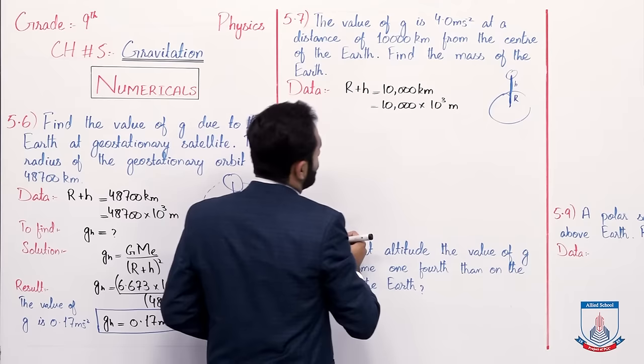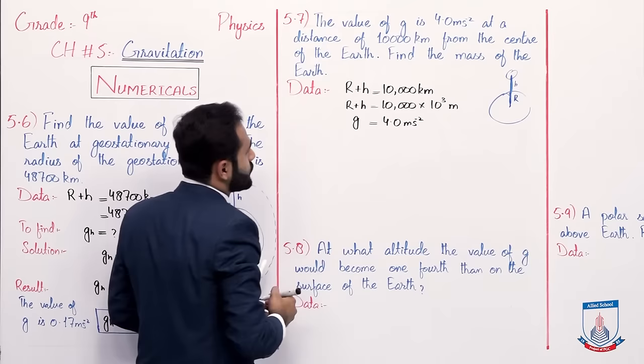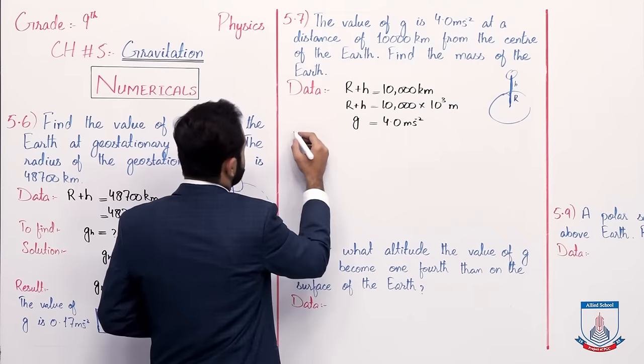The value of g given is 4.0 meters per second squared, and we have to find the mass of the Earth.